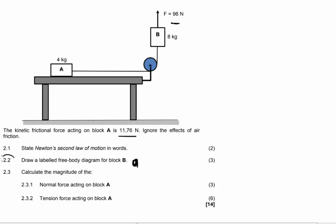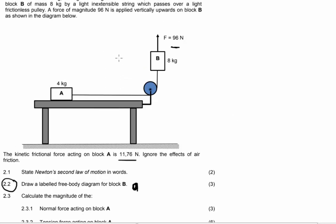Then for the next question you have to draw a labeled free body diagram for block B. So if we have a look at block B up here, instead of having a block we'll have a dot. Upwards will be our applied force of 96 Newton. I'm going to call it force subscript A. So don't forget that this is the applied force.